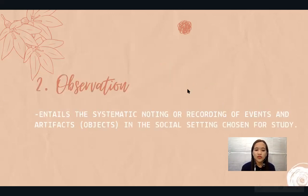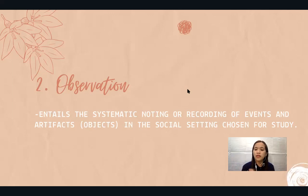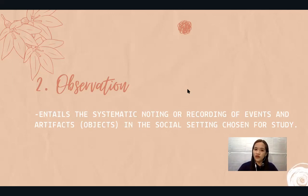The second kind is observation, which entails systematic noting or recording of events and artifacts in the social setting chosen for study. You have to take down notes or record — either one. You just let your respondents do their thing, observe and do nothing. Just take down notes or record what they are saying or doing. You're not doing anything here — just observing.